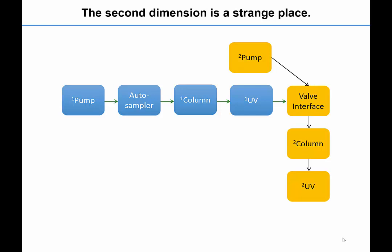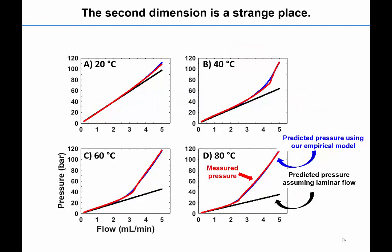Recently, we have discovered that turbulent flow can develop in the second dimension of the instrument, which can lead to much higher than expected operating pressures. This slide shows that pressures predicted for second dimension using conventional models do not accurately describe what we see in experiments.